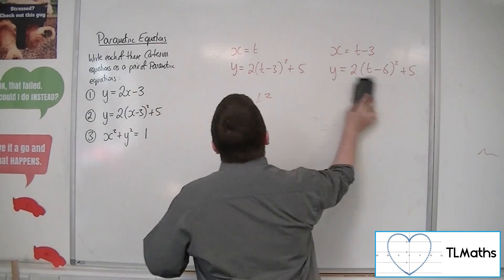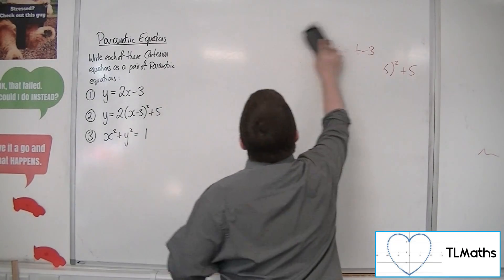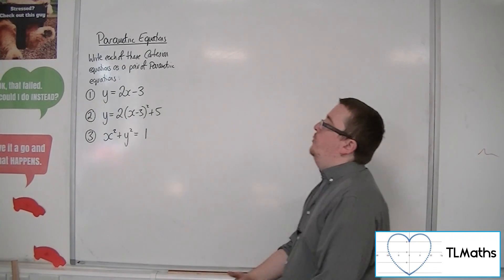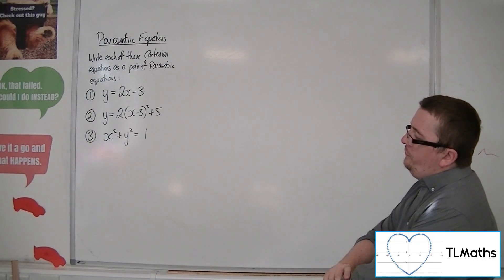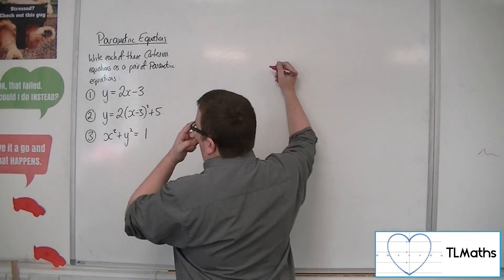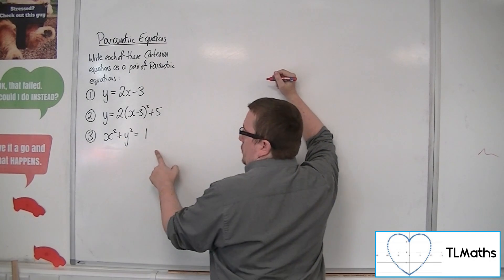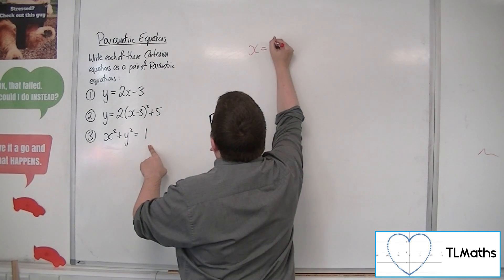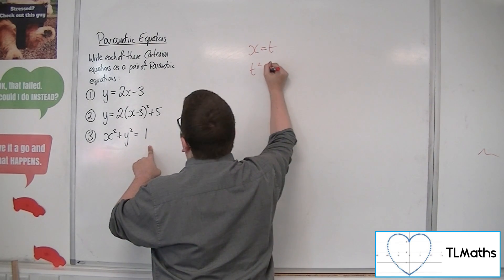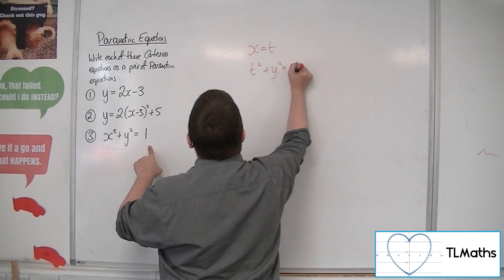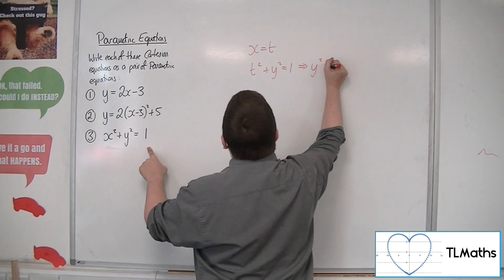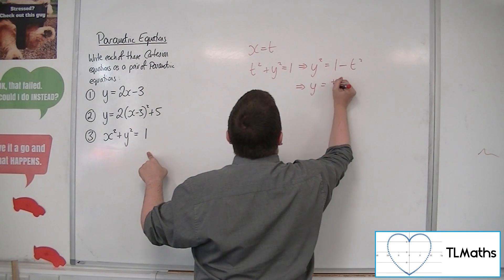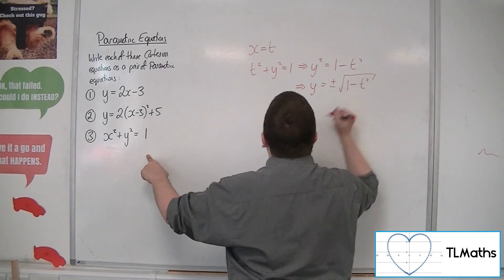Now, with number 3, it might not be as obvious. Because now we've got x squared plus y squared equals 1. And we know that that is a circle centered at the origin with radius 1. If I let x be t, then I would have t squared plus y squared equals 1. So I could say that y squared is 1 minus t squared. And so y would have to be plus or minus square root of 1 minus t squared.